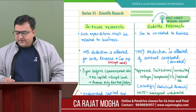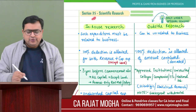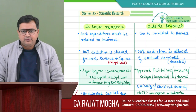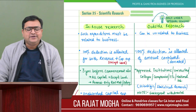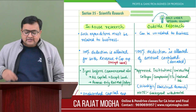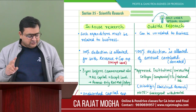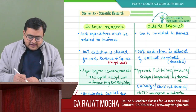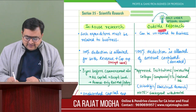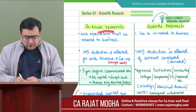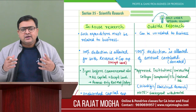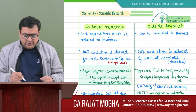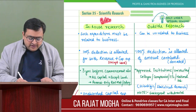Section 35 is related to scientific research - a very easy and very important section, from the examination point of view. There are two kinds of scientific research under Section 35: one is in-house research and the second is outside research. In-house research means the research is conducted in your own business for your own business, so it must be related to your business.